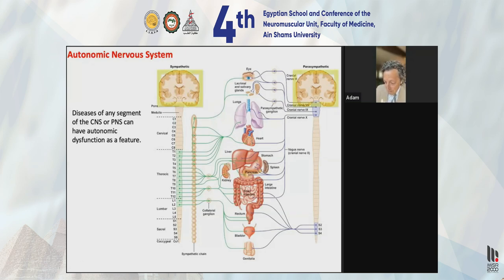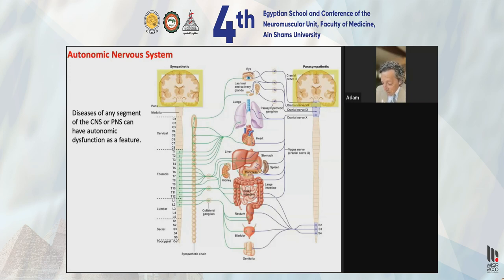Subcortical lesions affecting the hypothalamus, brainstem, and spinal cord can include trauma, tumors, multiple sclerosis, stroke, ischemia, and autoimmune disease. There are also diseases that affect the entire neuraxis, such as synucleinopathies or autoimmune diseases that can affect all neurons in the body.